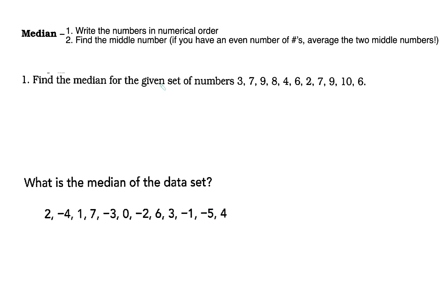The first example says: find the median of the given set of numbers. I count my data set first to see whether I'm dealing with odd or even — I have 11 numbers, so this is an odd data set. Remember: you must put them in order from smallest to largest. The smallest number is 2, then 3, 4, then two 6s, two 7s, one 8, two 9s, and 10. Always count to confirm you still have 11 numbers.